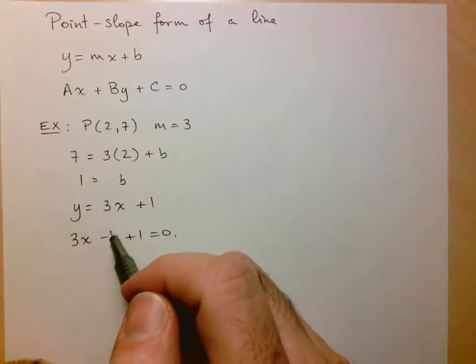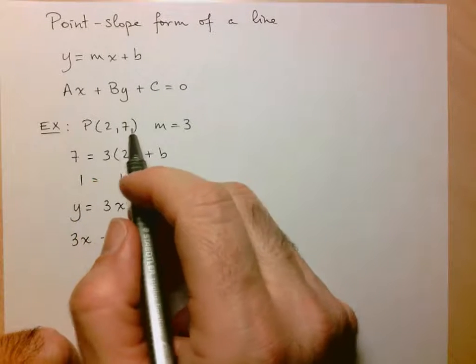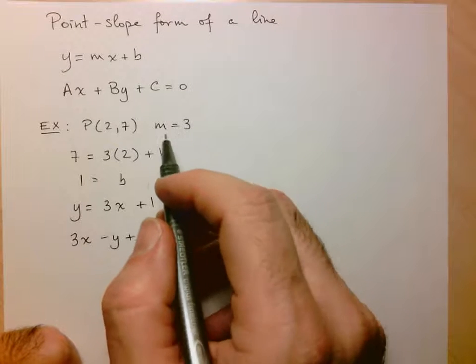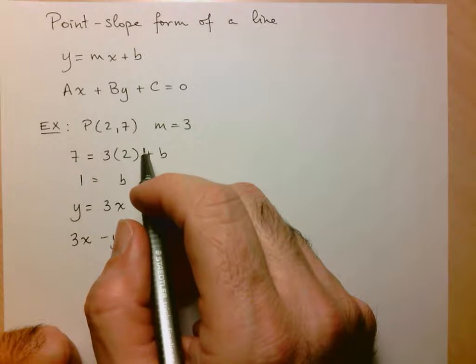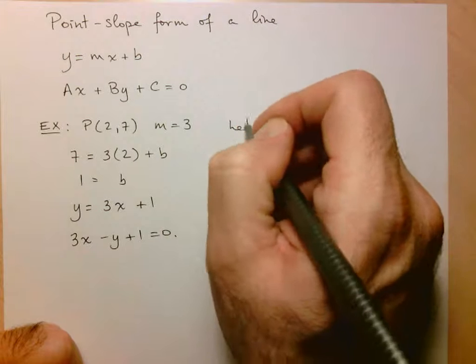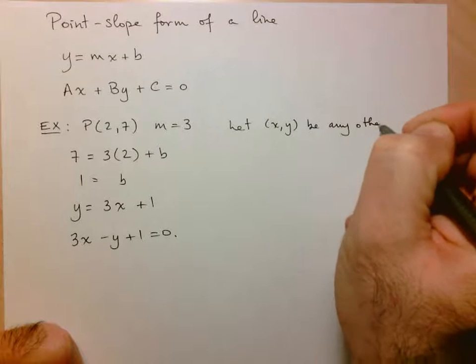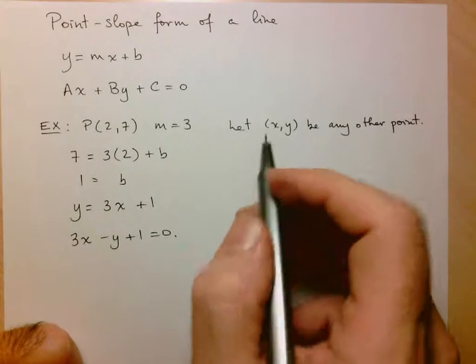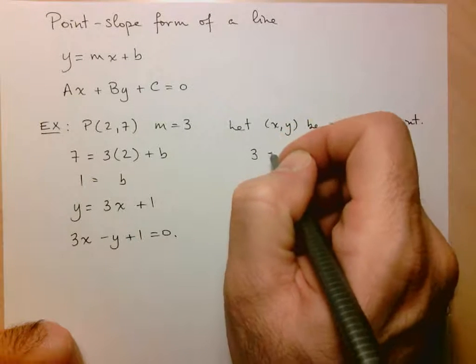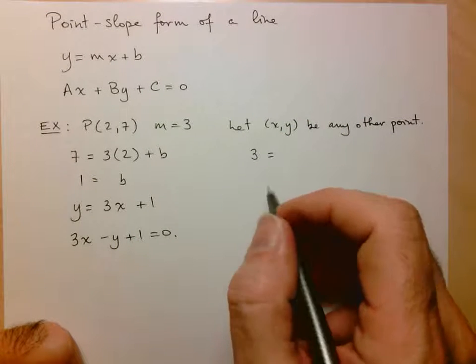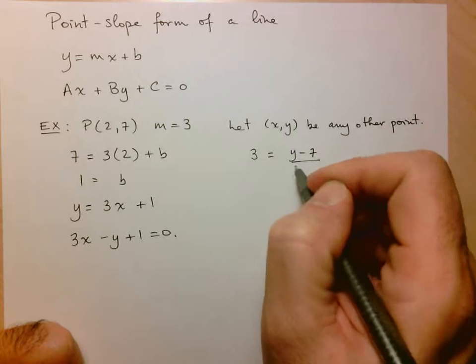We're going to look at an alternate form where we can just write the equation straight away. So let's start by using this example here. So I know that the line passes through (2,7) and I know that the slope is equal to 3. Because this is a line, the slope is constant throughout the whole domain. So it doesn't matter which two points I use to find the slope. So what I'm going to do is I'm going to say let (x,y) be any other point on the line.